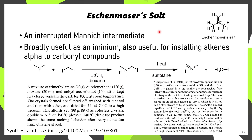The next reagent is Eschenmoser's salt. This is essentially an interrupted Mannich reaction intermediate, easily prepared from the reaction of trimethylamine with diiodomethane. The resulting quaternary ammonium salt is then heated in sulfolane, driving off iodomethane and forming the desired Eschenmoser's salt. Sometimes other counter-ions are used besides iodide, but this is one of the commercially available forms.